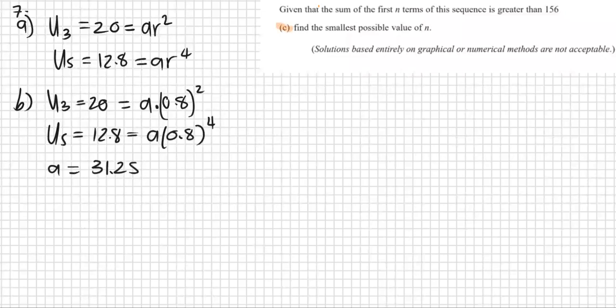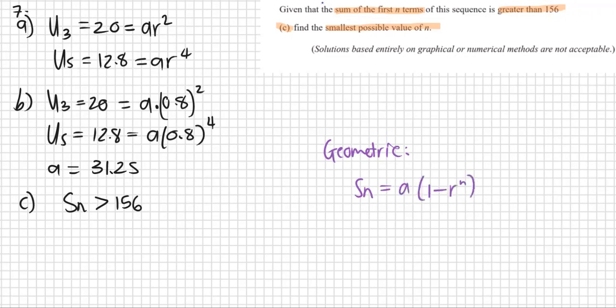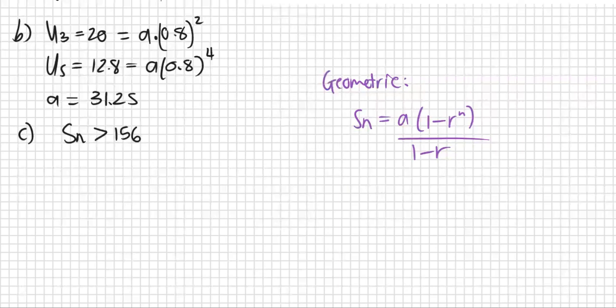Number C gives us extra information. It's given that the sum to the first n terms is greater than 156. Find the smallest possible value of n. Let's start with the S_n formula. For geometric sequences, the sum to n is a times 1 minus r^n, all over 1 minus r. We have our a value, 31.25, and r was 0.8.